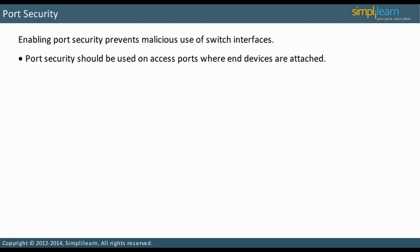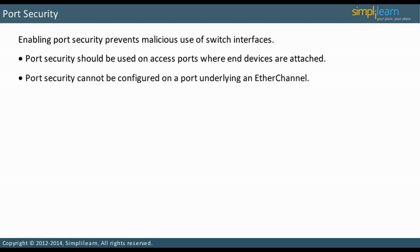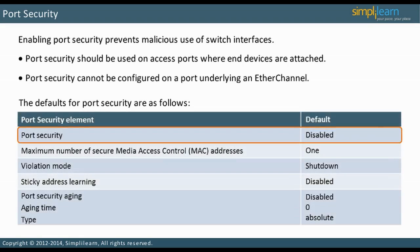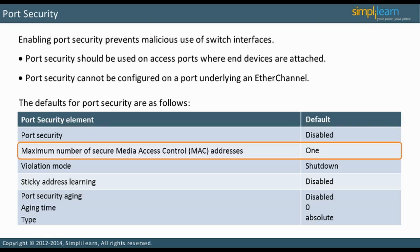Enabling port security can protect switch interfaces from being used maliciously. Port security cannot be configured on a port underlying an EtherChannel. By default, port security is disabled and the default maximum number of secure MAC addresses is 1, meaning only one device can be attached to one switch interface.